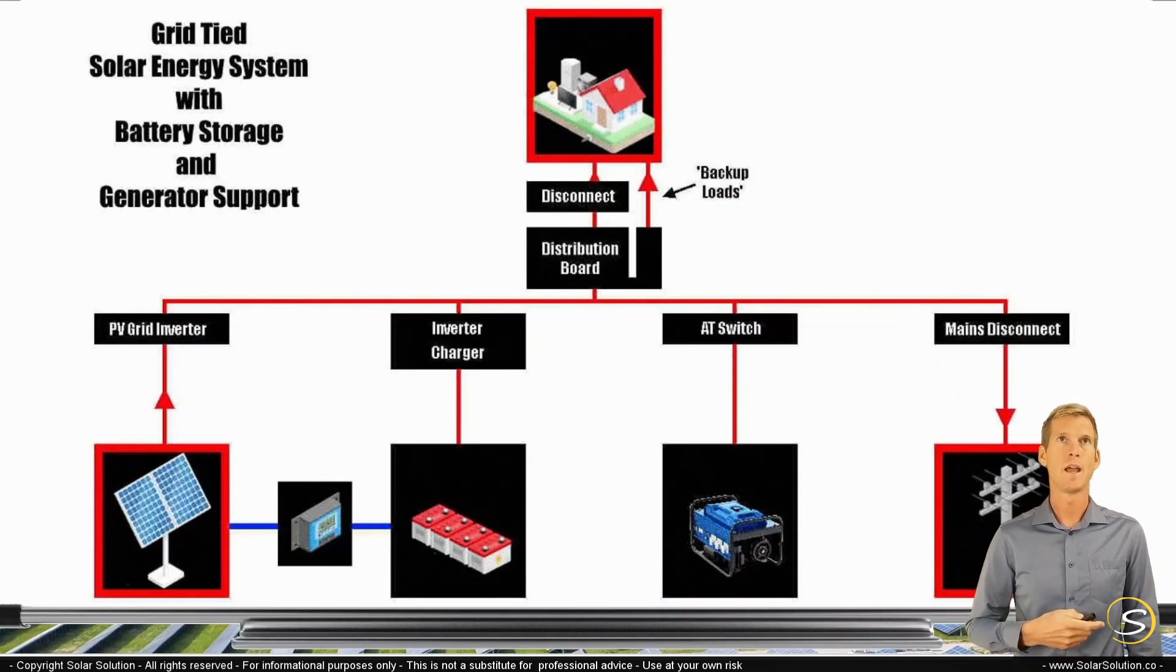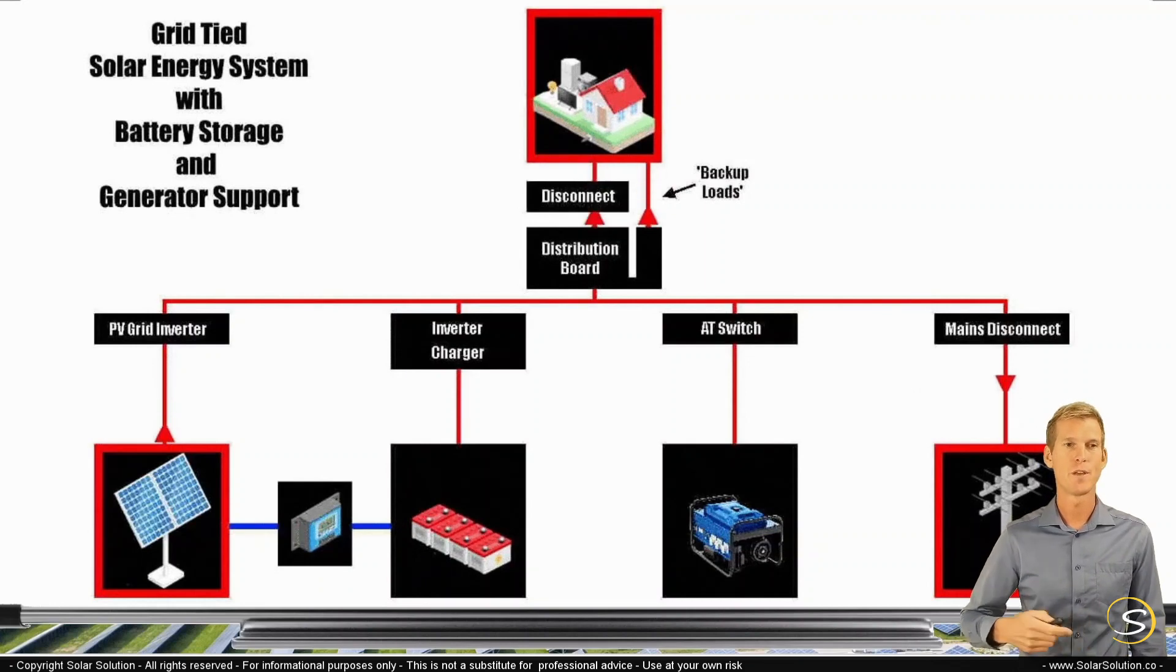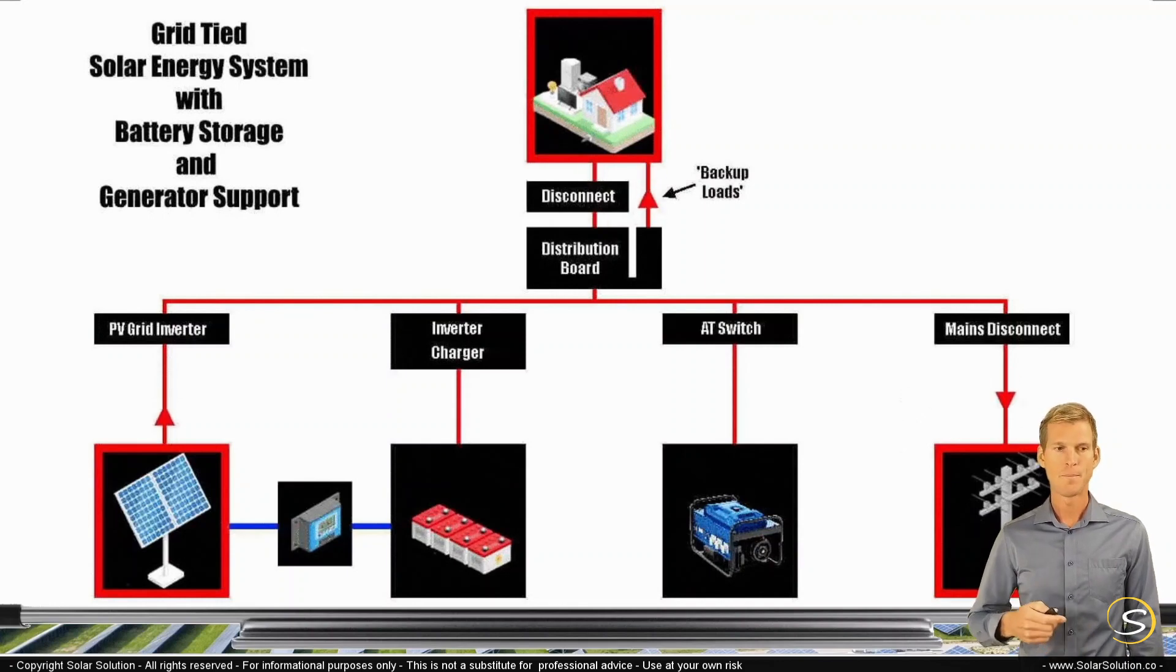Your batteries are full, so you have a surplus of electricity, and you're feeding it back to the grid. But now, during dinner time, you are cooking, you're doing all your things in your house, you are consuming quite a bit of electricity, and the grid goes down. There's a blackout, a power outage, a power cut, and there's no more electricity available from the grid.